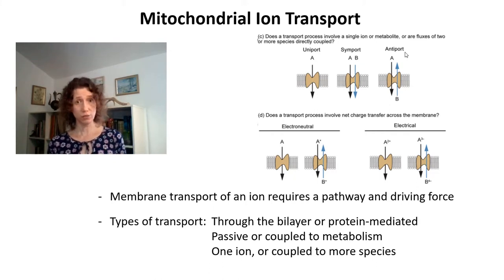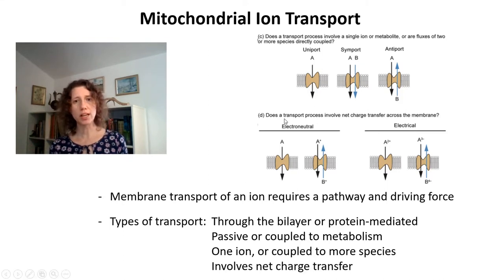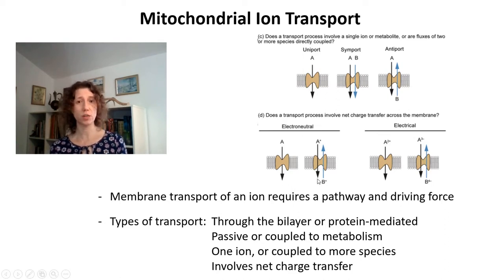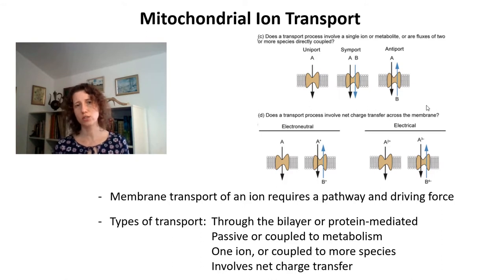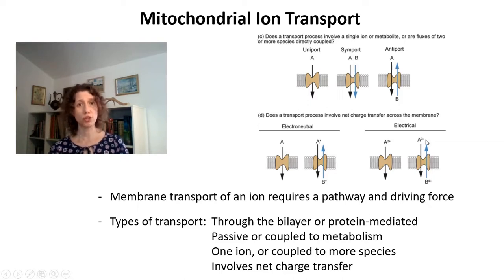Transport can be electroneutral, either when what you're transporting has no charge, or when you have an exchange of one substance for another with exactly the same charge, so there's no net charge change. Or it can be electrogenic, in which you have a change in charge across the two sides of the membrane — you transport a charged species, or two species with different charges, resulting in a net change of charge.